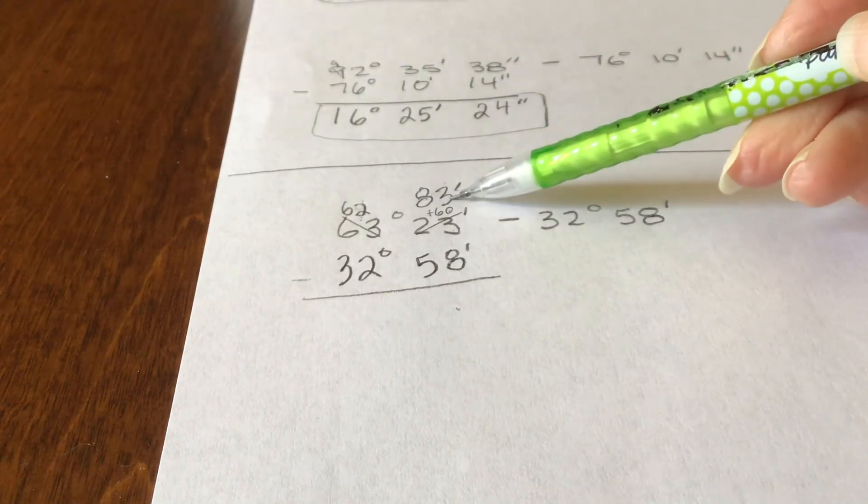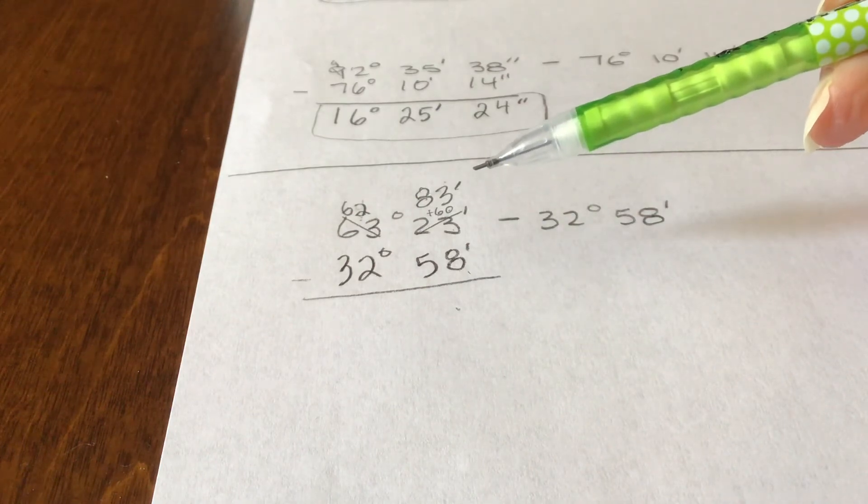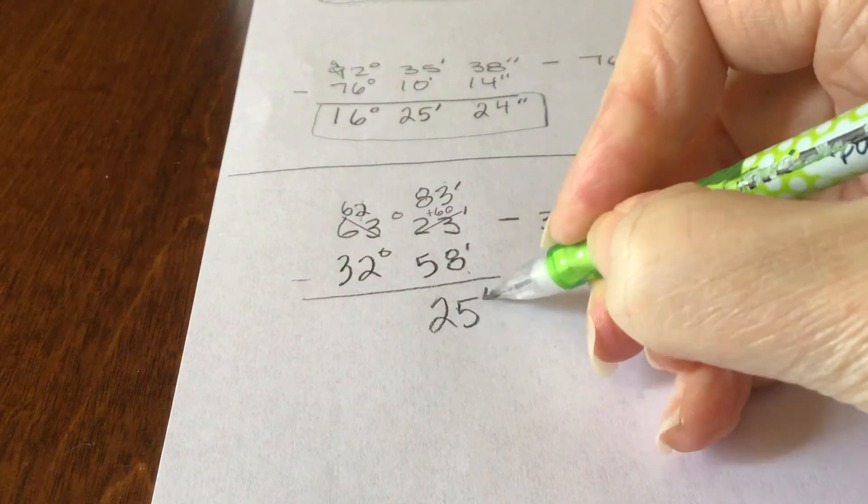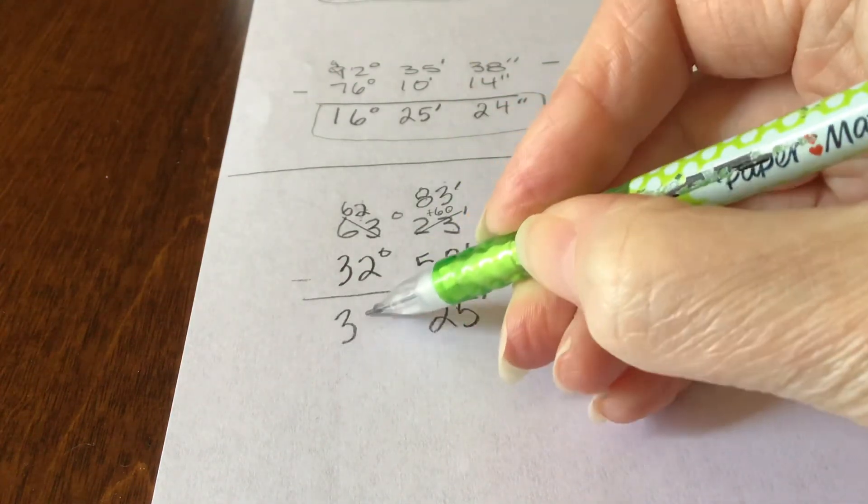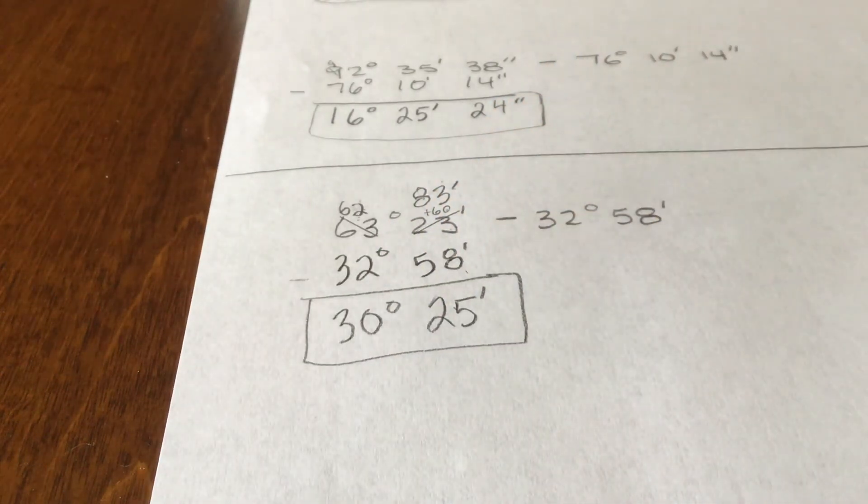And now I can do my subtraction. 83 minus 58 is 25. And 62 minus 32 is 30. All right. I hope this video is useful for you when you do your Google quiz. Try your best and I'll talk to you next week. Bye.